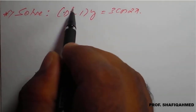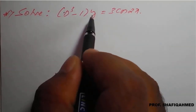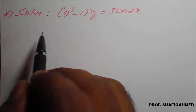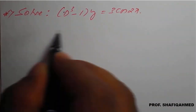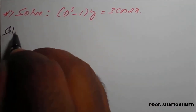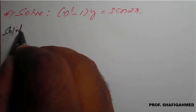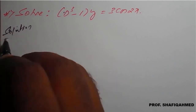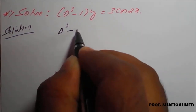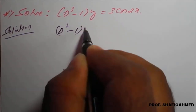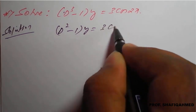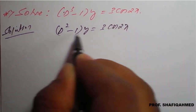The problem is (d² - 1)y = 3cos(2x), which is the given differential equation. So, (d² - 1)y is equal to 3cos(2x).